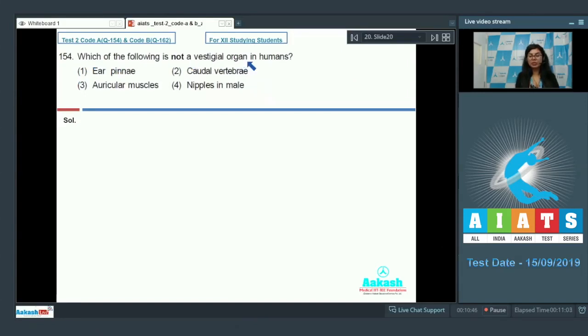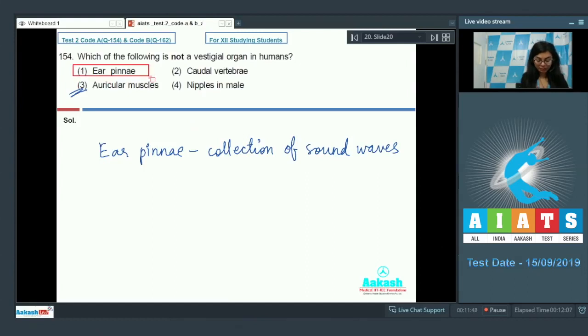Question 154. Which of the following is not a vestigial organ in humans? Ear pinnae, caudal vertebrae, auricular muscles, nipples in male. Vestigial organs do not have a defined function at the moment in human body. Let's try the functions. Ear pinnae have the defined function of collection of sound waves and they are not vestigial. Auricular muscles, option number 3, they are vestigial. Auricular muscles are vestigial as we no more can move our ears. Caudal vertebrae are vestigial, nipples and excessive body hair in males are vestigial. So the correct option is ear pinnae. Answer is 1.